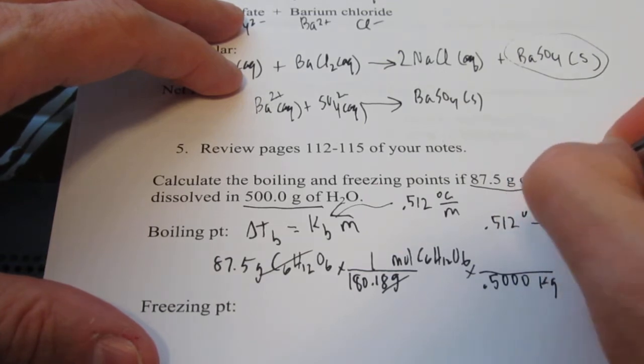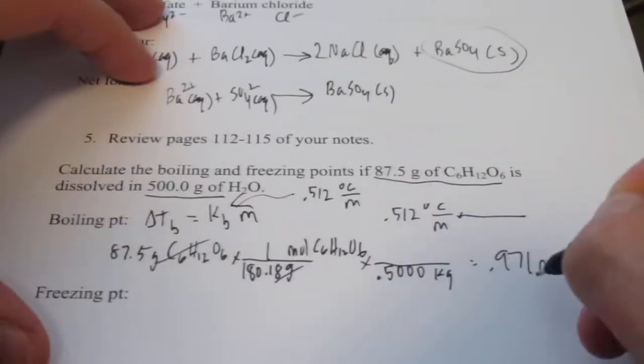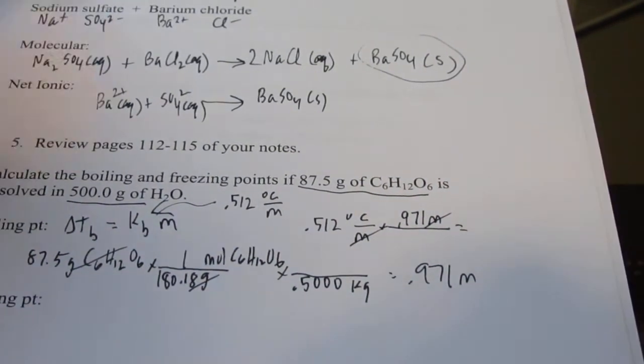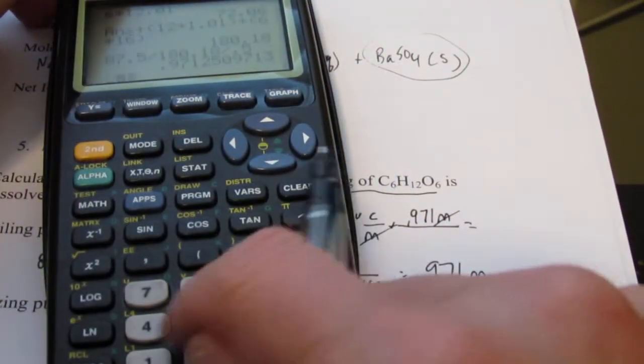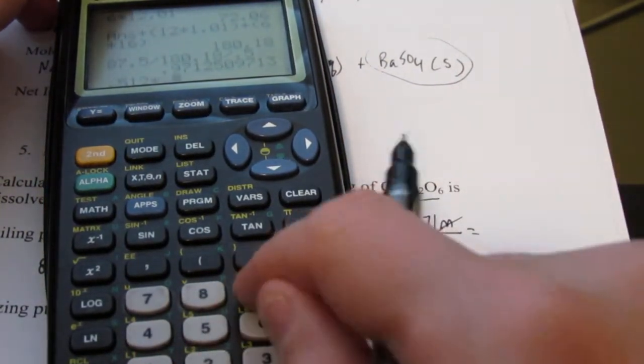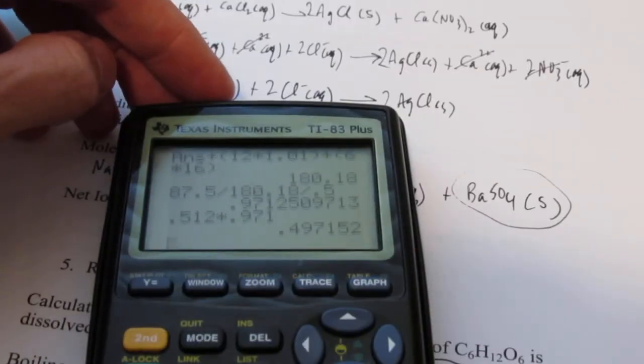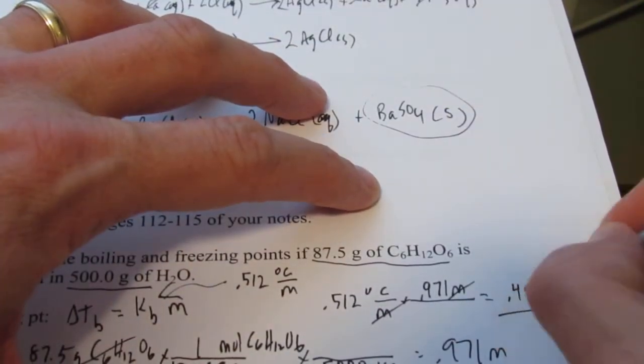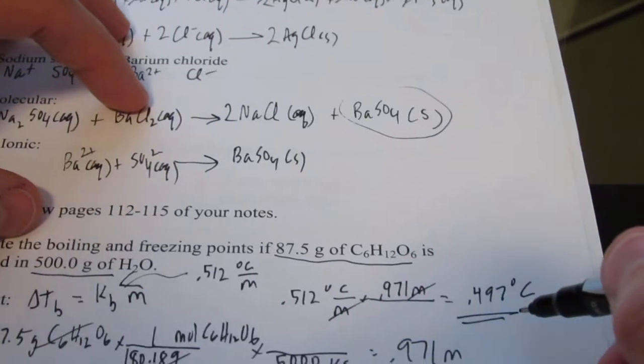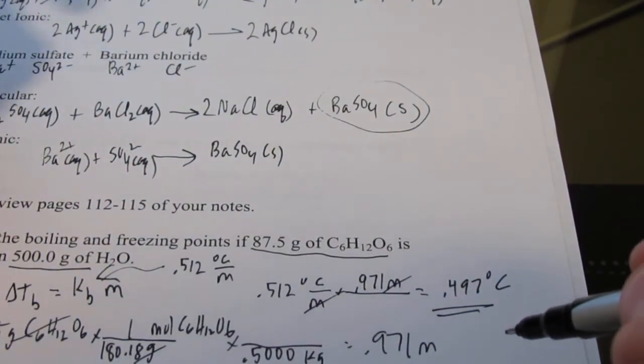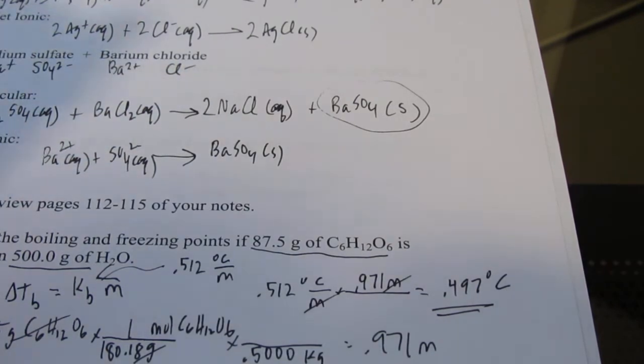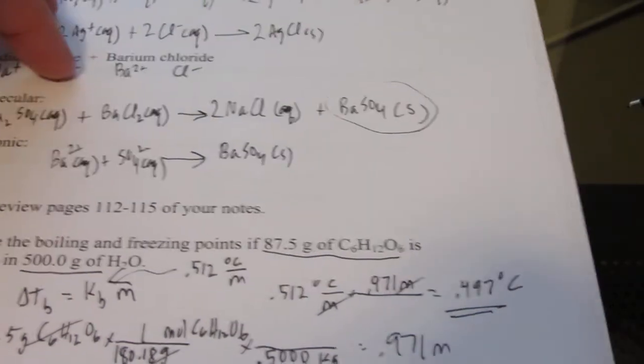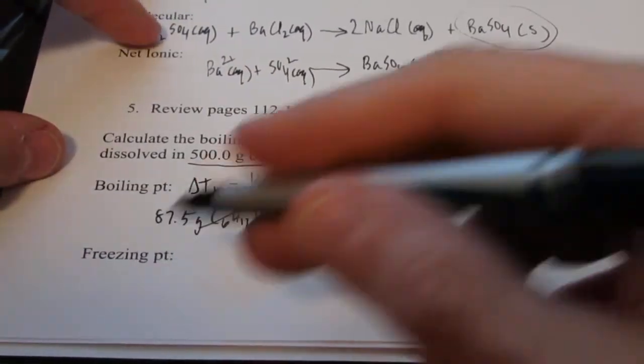87.5 divided by 180.18 divided by 0.500 kilograms gives me a molality of 0.971 molal. I'm going to take my boiling point constant times my molality: 0.512 degrees Celsius per molal unit times 0.971 molal units. This gives me 0.497 degrees Celsius. That would be my boiling point change. The normal boiling point of water is 100.00 degrees Celsius, so my new boiling point would be 0.497 degrees Celsius higher than that. Remember, it's boiling point elevation.